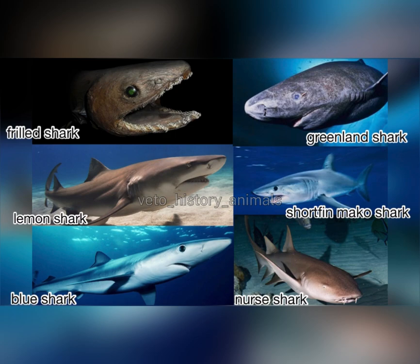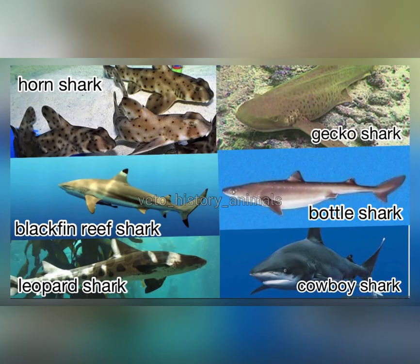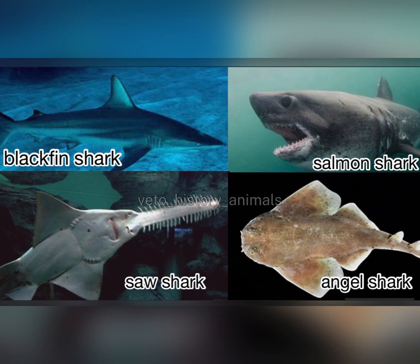14. Ginglymostoma cirratum or Nurse Shark, 15. Prionace glauca or Blue Shark, 16. Megachasma pelagios or Megamouth Shark, 17. Isistius brasiliensis or Cookiecutter Shark, 18. Squalus acanthias or Dogfish Shark, 19. Carcharias taurus or Sand Tiger Shark, 20. Alopias or Thresher Shark, 21. Carcharhinus longimanus or Oceanic Whitetip Shark, 22. Heterodontus francisci or Horn Shark, 23. Squalidae or Dogfish Shark, 24. Stegostoma tigrinum or Zebra Shark, 25. Triakis semifasciata or Leopard Shark, 26. Carcharhinus melanopterus or Blacktip Reef Shark, 27. Carcharhinus limbatus or Blacktip Shark, 28. Lamna ditropis or Salmon Shark, 29. Pristiophoridae or Saw Shark.